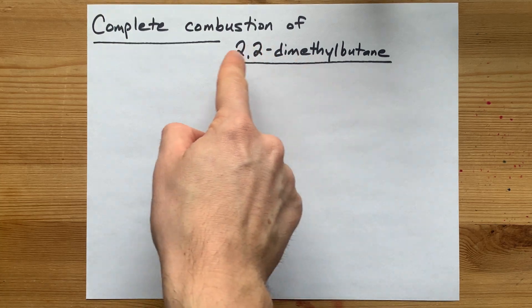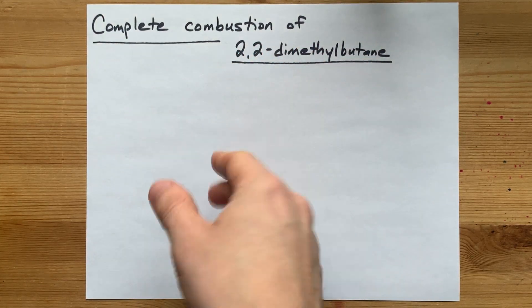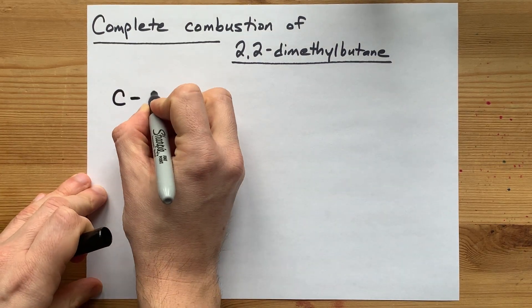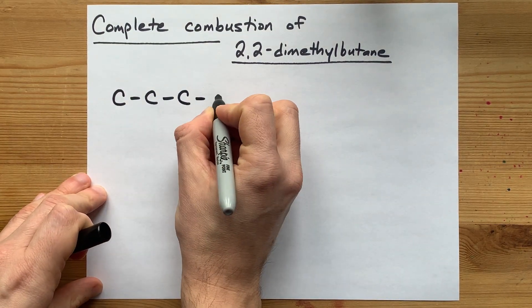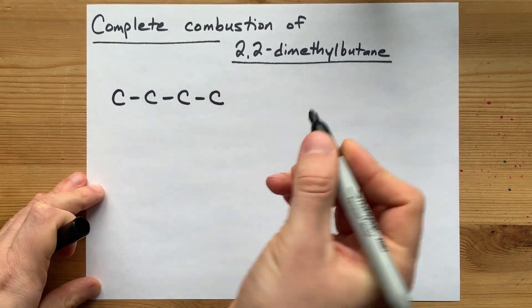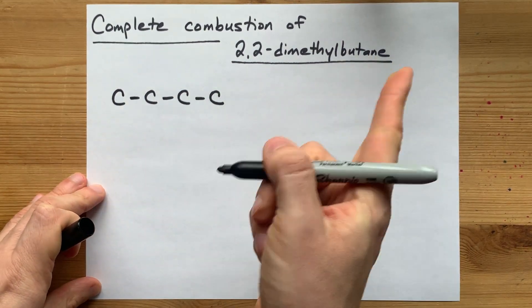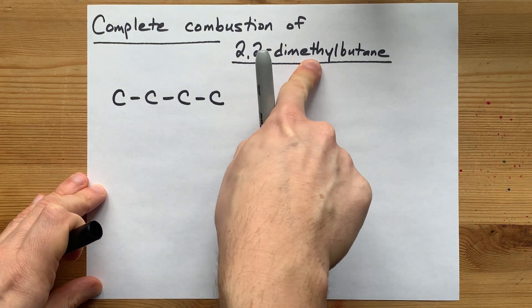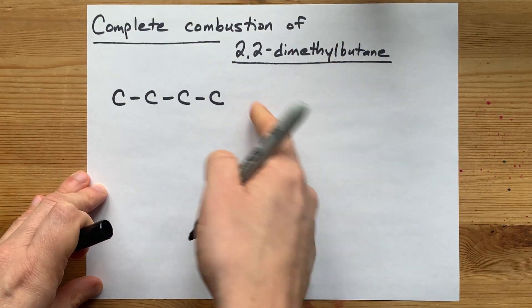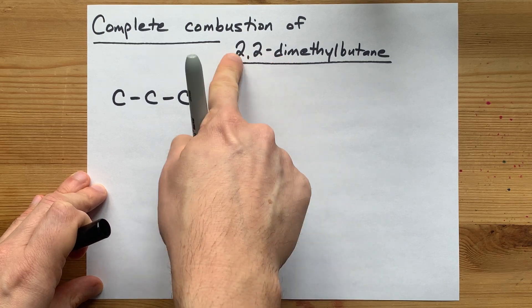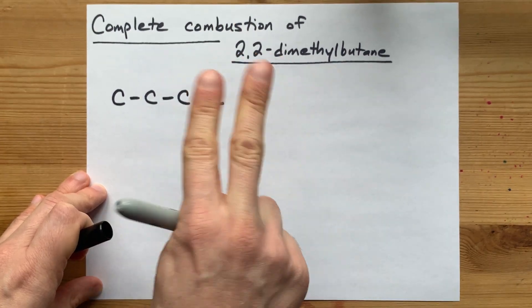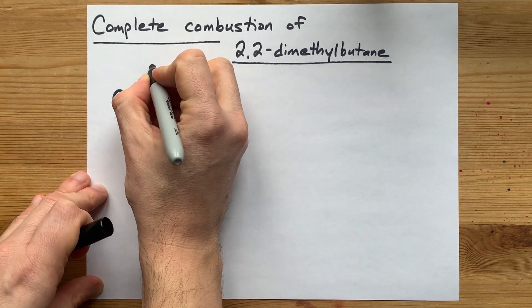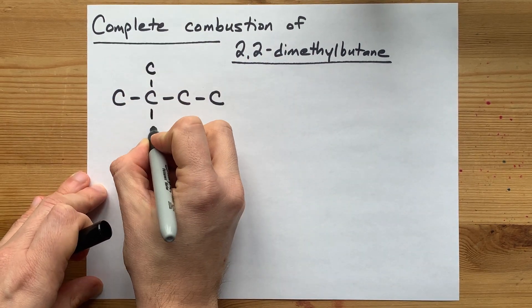Before we start that, we need to draw 2,2-dimethylbutane to know its formula. Butane means that there are four carbons in a row. Then we number them in our heads: 1, 2, 3, 4. This tells us that there are two methyl groups. Methyls are chains of one extra carbon, and both of those two are on carbon number 2 of the chain. So I'm going to put a one-carbon chain here and a one-carbon chain here.